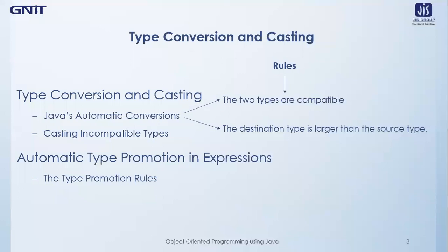As you already have previous programming experience in C and C++, you know it is fairly common to assign a value of one data type to a variable of another data type. If the two types are compatible, Java will perform the conversion automatically. For example, it is always possible to assign an integer value to a long variable because both int and long are integer types and thus compatible. However, not all types are compatible — for instance, there is no automatic conversion defined from double to byte.